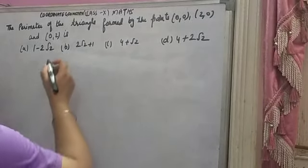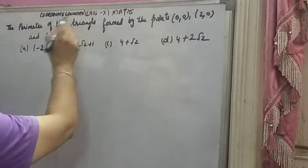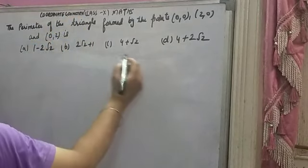Dear students, welcome back to your favorite channel, Math Helpers. Coordinate geometry question: find the perimeter of triangle formed by points.